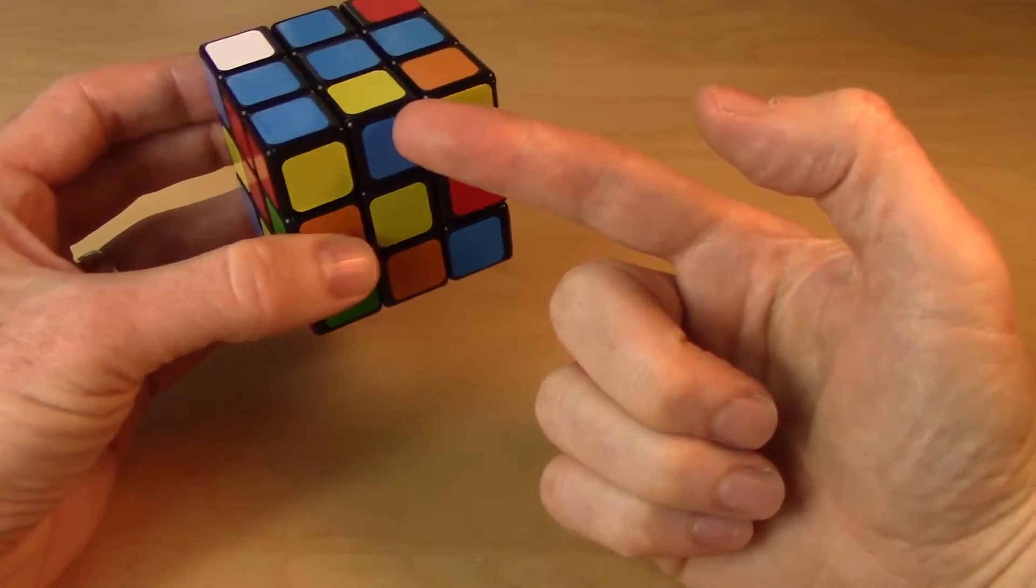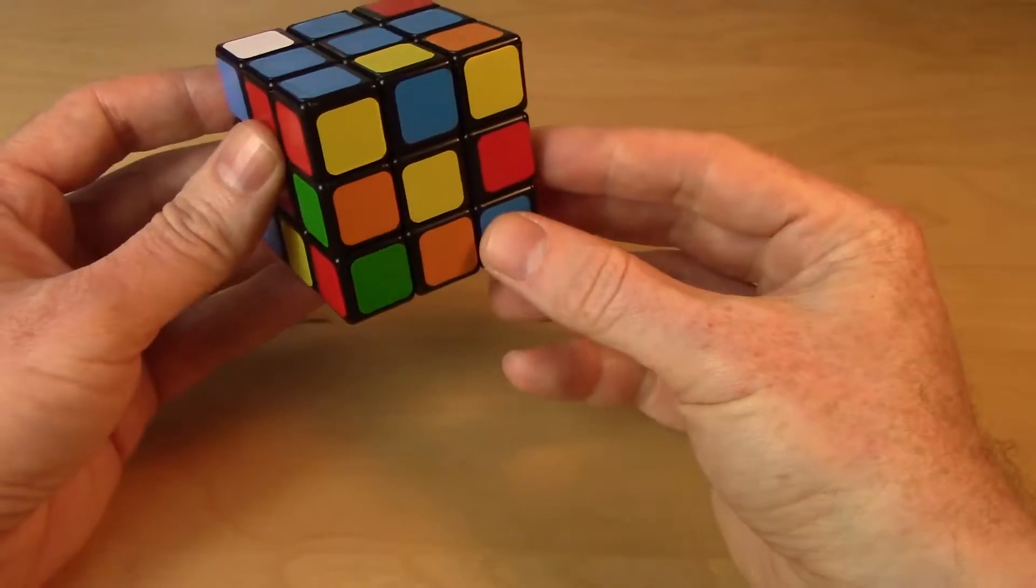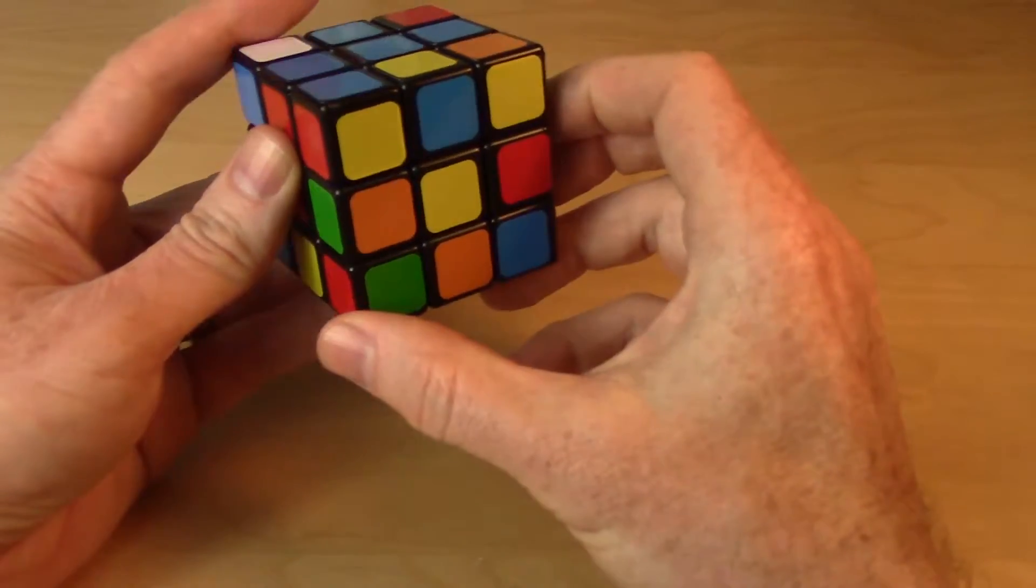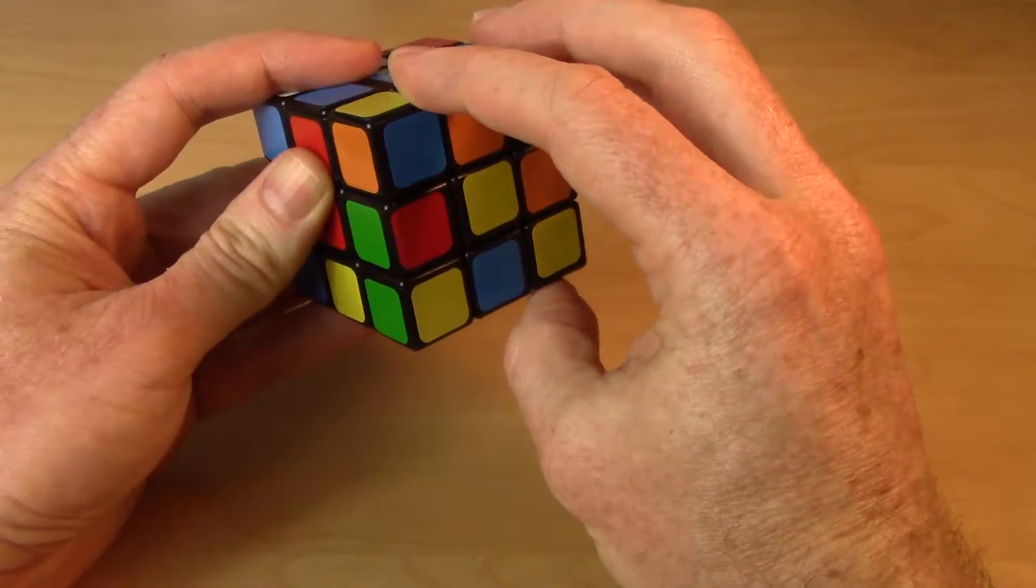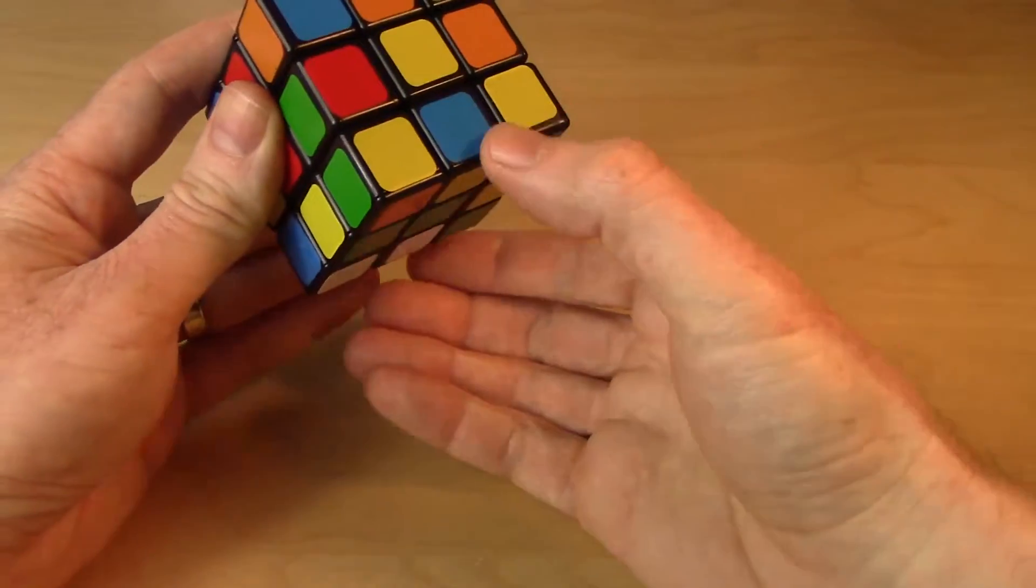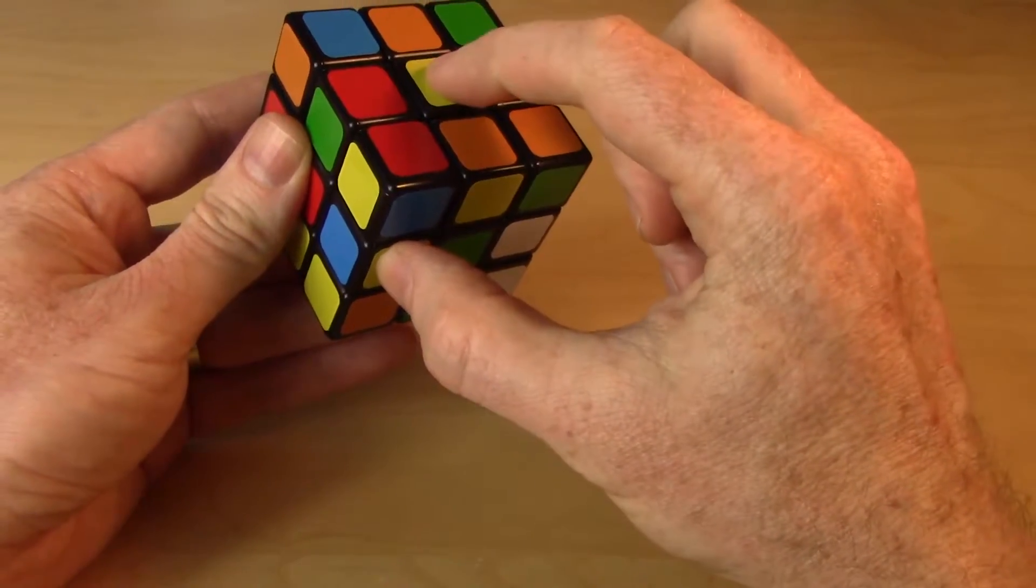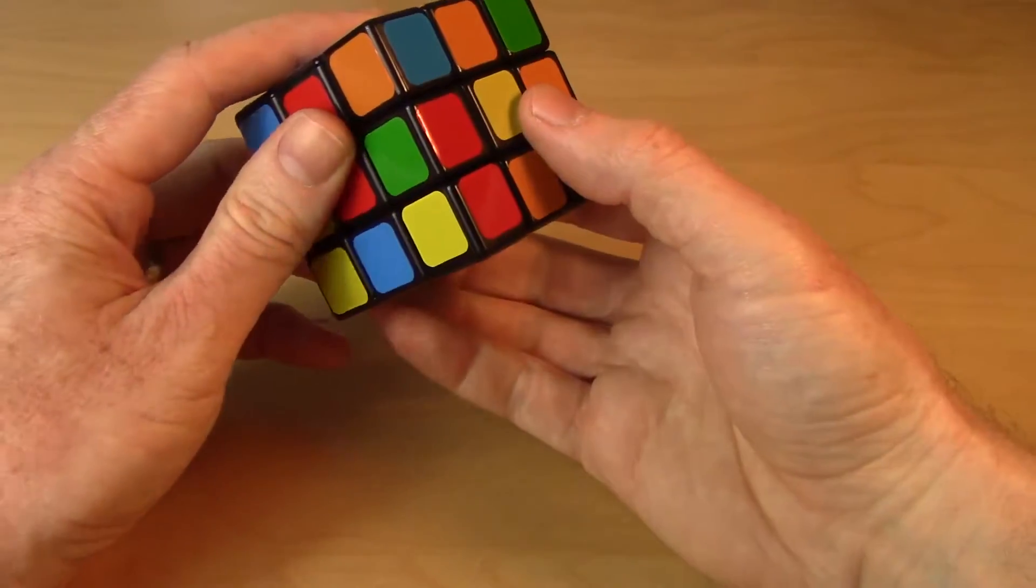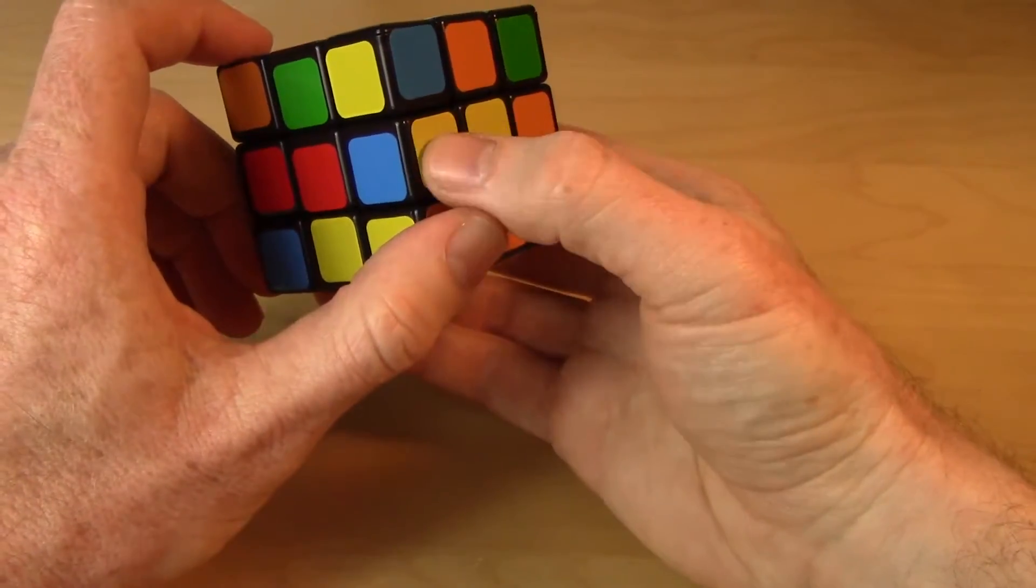So the last piece just happens to be sitting in the proper location, it's just not in the right orientation. So I need to flip it over so I'll have to bring it down. So I bring it down to the bottom layer. Notice all the other three pieces haven't been touched yet. I'll move it over to the side, because I want that yellow to match with the yellow in the center. Now here's where I have to be careful.